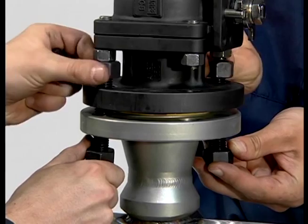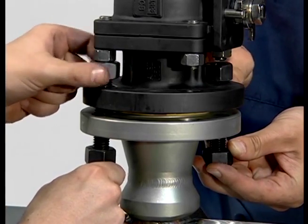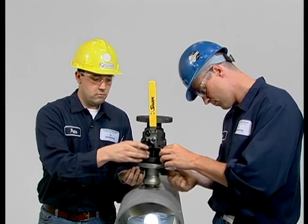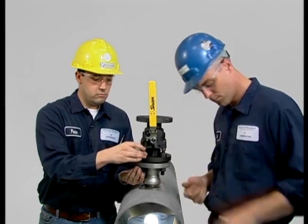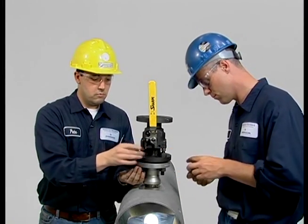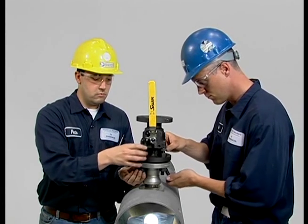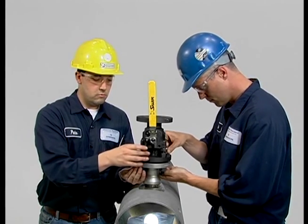Check that the gasket holes are aligned so the bolts will pass through. Be sure the valve stem is positioned in line with the pipe so that when the flow tap is installed, the insertion rods will straddle the pipe and the valve handle will be centered between the rods.